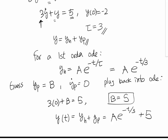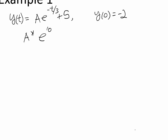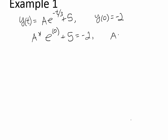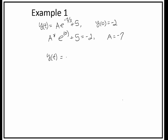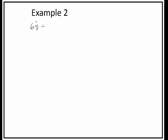We then plug in the initial condition to solve for the constant a. Plugging in y sub 0, we get a times e to the 0 plus 5 equal to negative 2, which gives us a equal to negative 7. So my complete solution is negative 7 times e to the minus t over 3 plus 5.